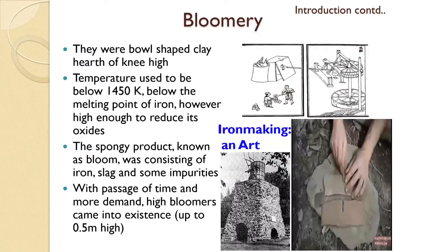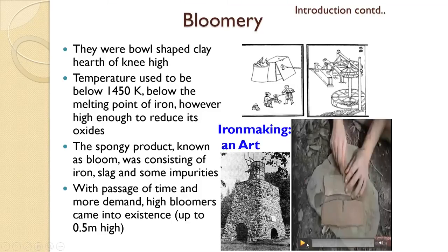This spongy product known as bloom consists of iron, slag, and some impurities. The following movie gives you an idea about how blooms are produced.